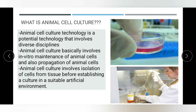Animal cell culture involves isolation of cells from tissue before establishing a culture in a suitable artificial environment. Basically, animal cell culturing is the process by which cells are grown under controlled conditions, generally outside of their natural environment. Cell culture conditions can vary for each cell type, but artificial environments consist of a suitable vessel with a substrate or medium that supplies essential nutrients, providing everything the animal cell requires.